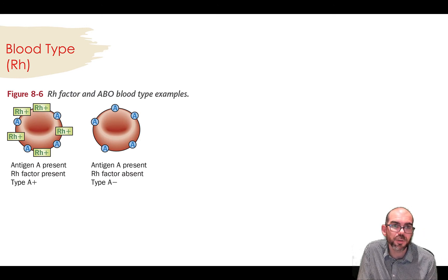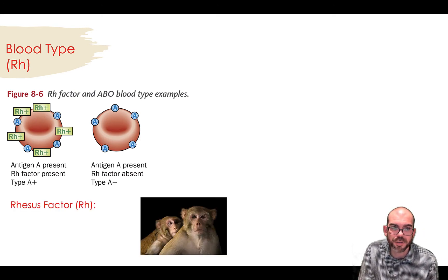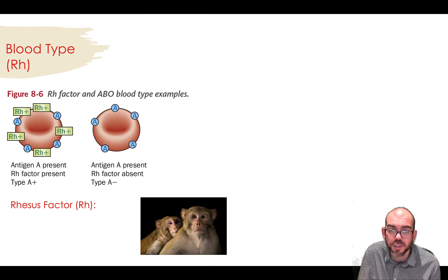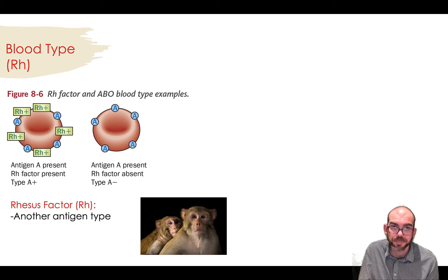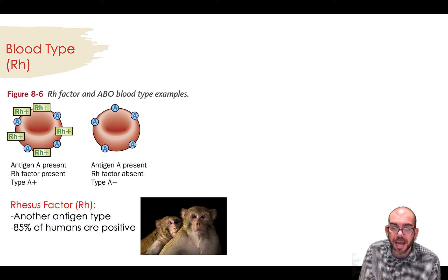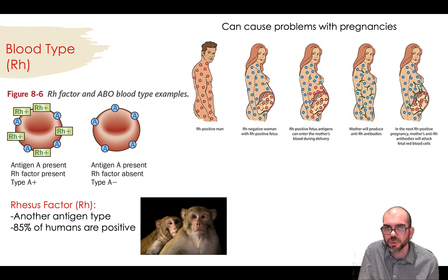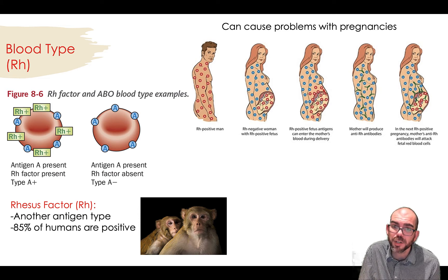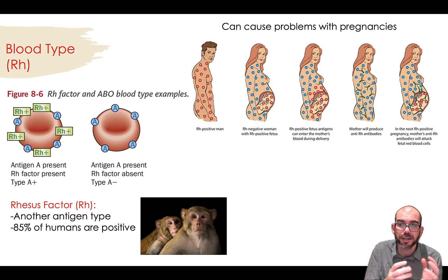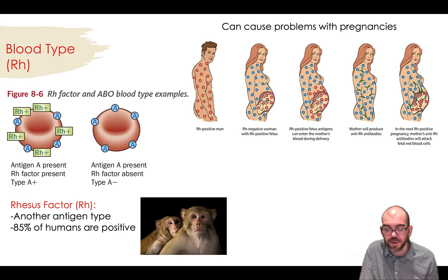Another type of blood typing found in humans is called the RH factor, named after the rhesus monkey where it was discovered. The RH factor is just another antigen — in addition to ABO — that can be present on human red blood cells. 85% of humans are RH positive. It's important to know if you are or not if you're going to have children. If an RH positive man has a child with an RH negative woman, that baby's going to be RH positive, and that creates interactions between the mom's blood and the baby's blood that can be antagonistic.